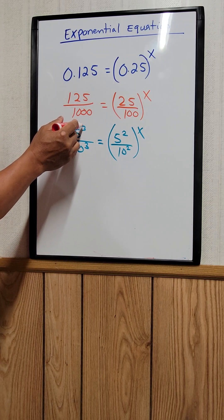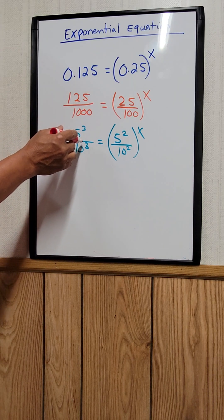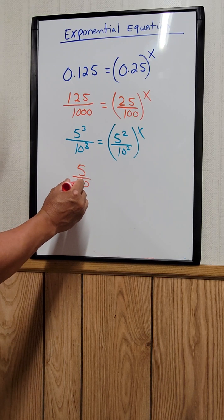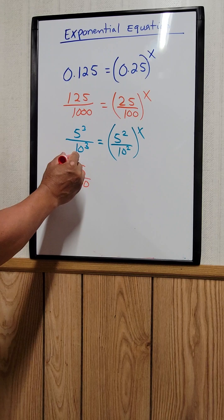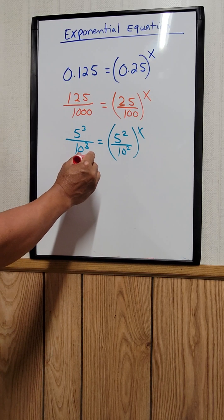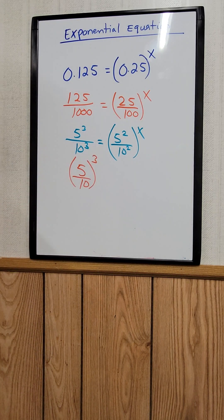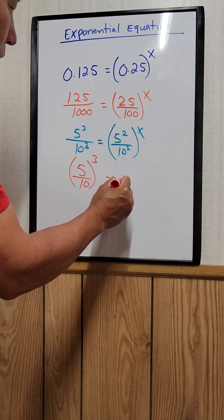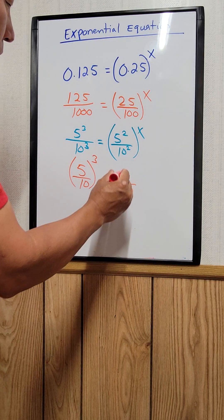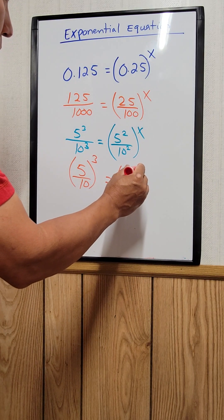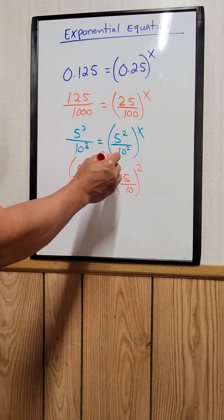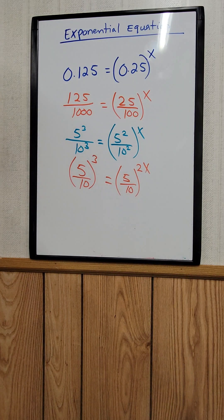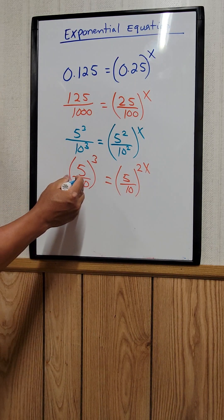Since the exponents are the same, we can rewrite that as 5 over 10, the whole thing to the third power. And this is the same thing here — 5 squared divided by 10 squared can be written as 5 over 10, the whole thing raised to the second power, and then times x.